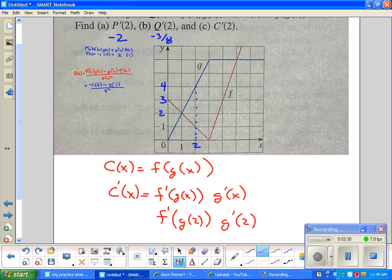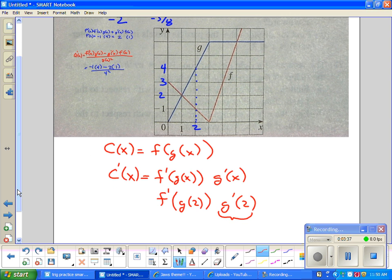Again, the slope at 2 is pretty easy. The slope of g at 2, we all agree, is the whole number 2. Right? We've had that. What is the value at g of 2? 4. And now I'm going to look at f prime of 4. Alright?